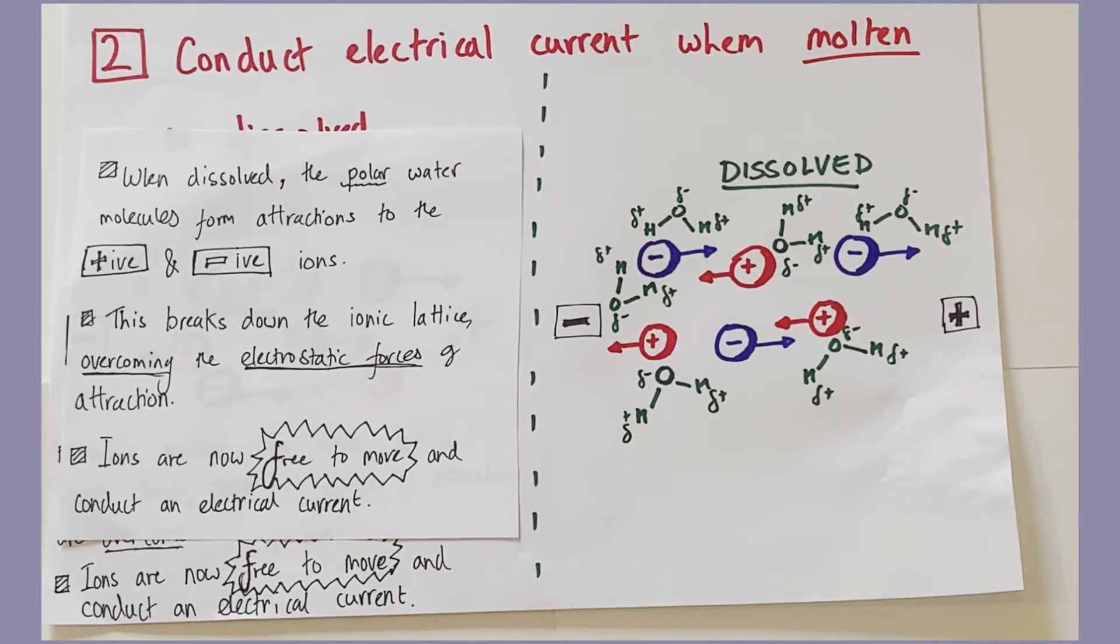They always have small partial charges associated with the water molecules themselves. You can see those partial charges drawn in my molecules here. That means that water molecules can actually attract towards ions. And actually when they do this, they can disrupt the ionic interactions between the ions themselves. This can help to break up the giant ionic lattice.